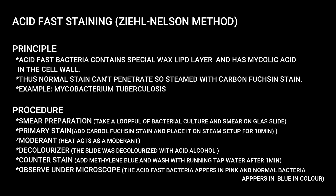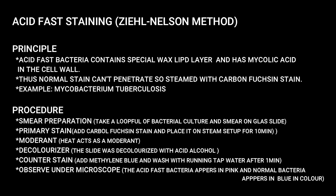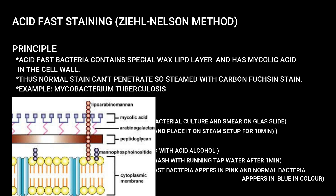Acid-fast staining uses the Ziehl-Neelsen method — the most commonly used method. Acid-fast bacteria, such as Mycobacterium tuberculosis, are gram-positive bacteria that can be identified by acid-fast staining. Acid-fast bacteria have a special wax lipid layer and mycolic acid in their cell wall, so normal stain cannot penetrate. They are steamed with carbol fuchsin stain.